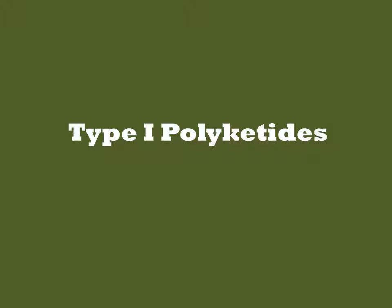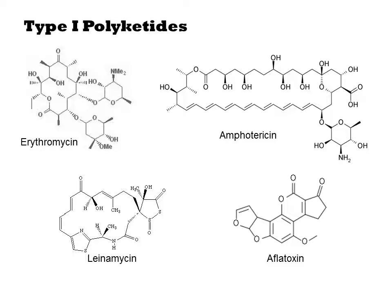When people speak of polyketides, they most often are talking about type 1 polyketides. The class is typified by very long carbon chains that are mostly linear. Unlike the type 2s, there will be no large highly reactive soluble intermediate. Instead, the type 1s finish each elongation step while it is on the megasynthase.